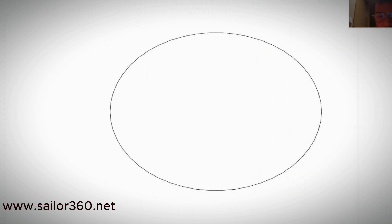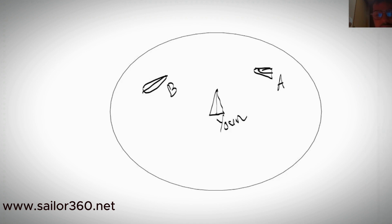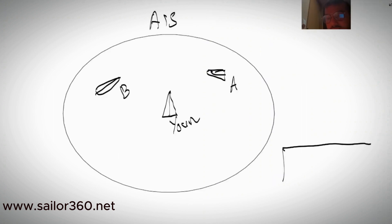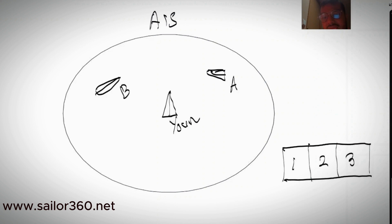To make SOTDMA easy to understand, imagine a circular line. Your vessel is in the middle, and there are two other vessels nearby — vessel A and vessel B. All three vessels have AIS. The AIS software has a time division system — the total time is divided into equal slots for each vessel.